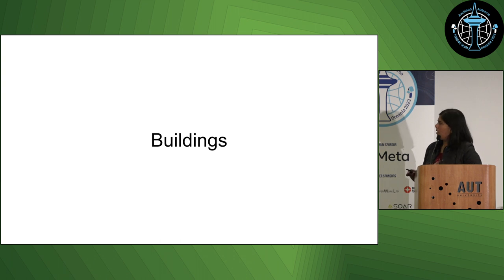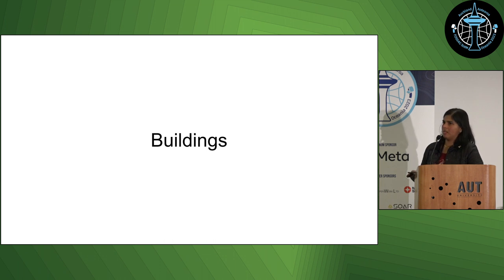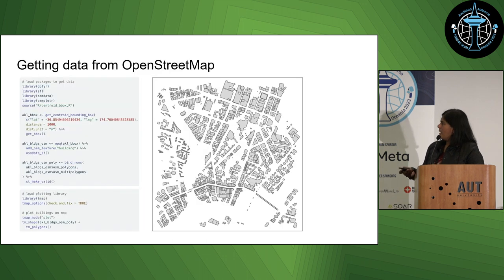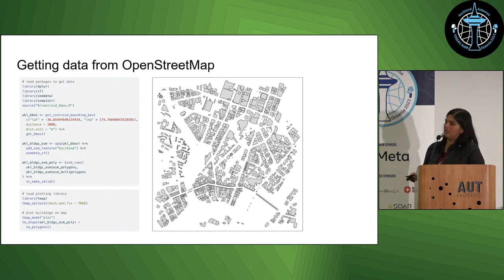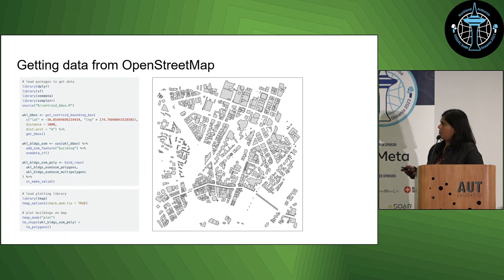We'll get to the last set of analyses, and that's around buildings — something I'm getting more interested in over the recent few months. Once again, following the same pattern, it's pretty easy to get data from OpenStreetMap for buildings. Instead of getting lines, you're now getting polygons. The query is quite simple — you just add the building tag to your data query. And this one is getting buildings around the centre of Auckland.